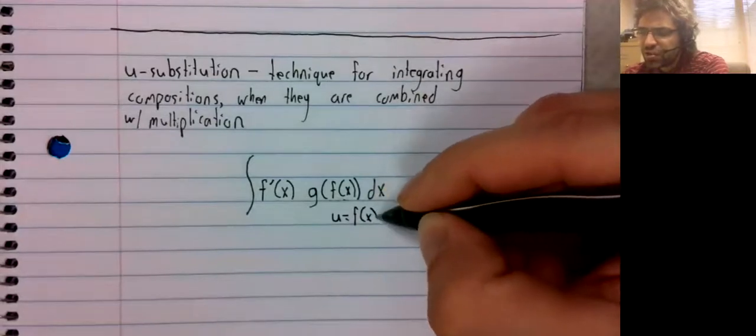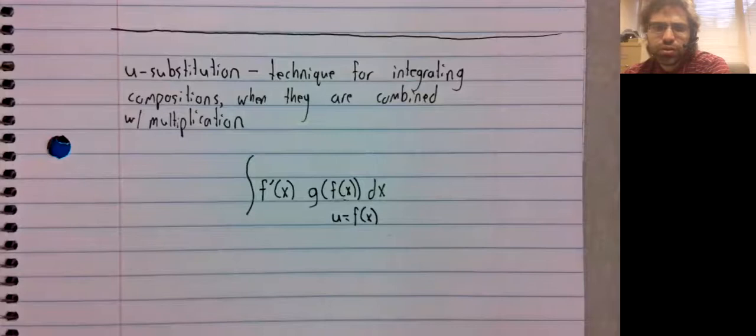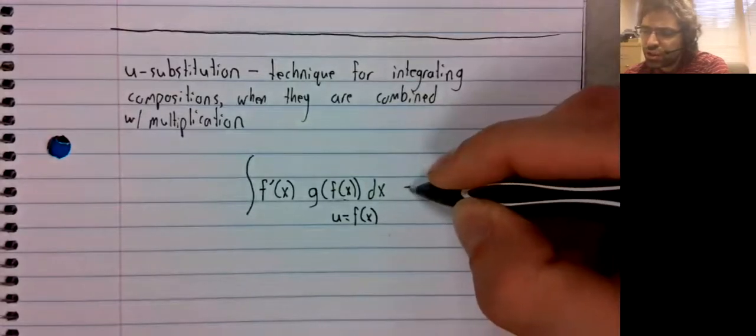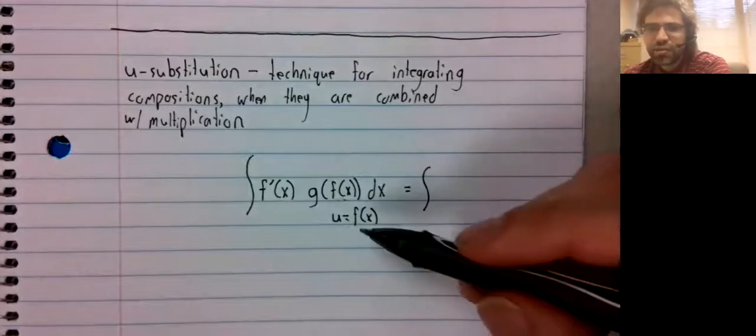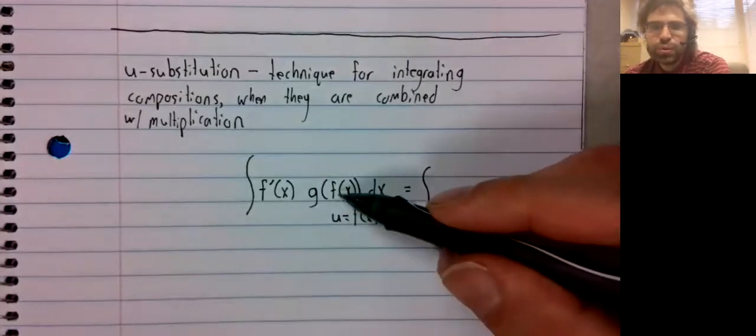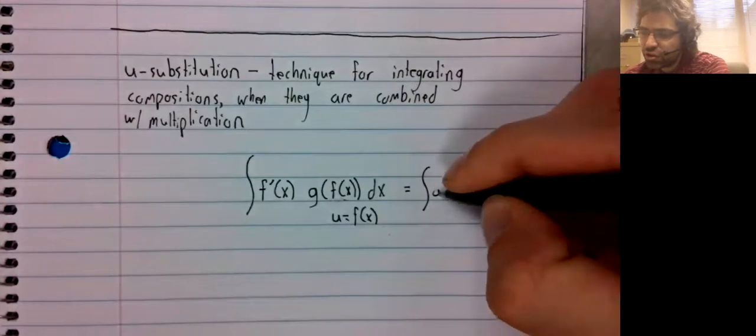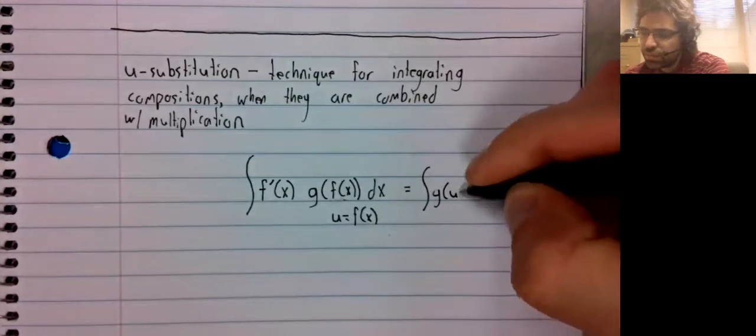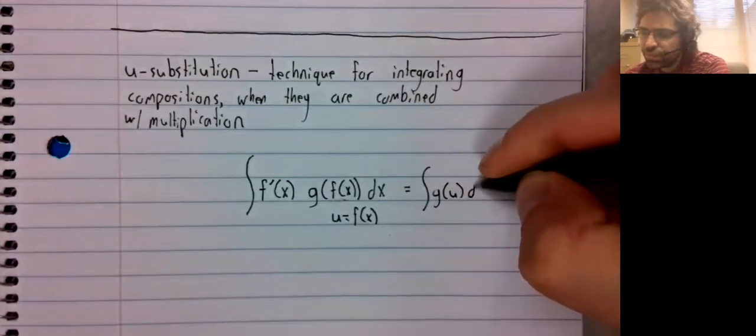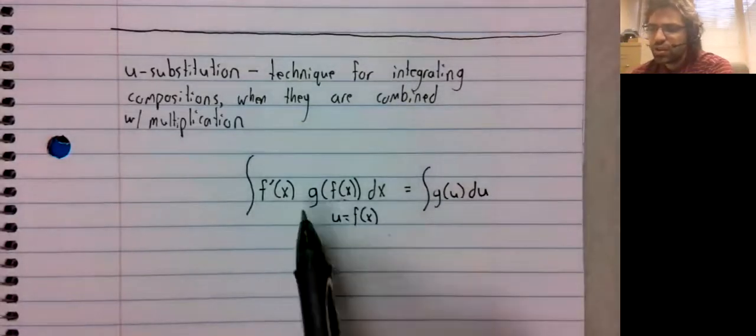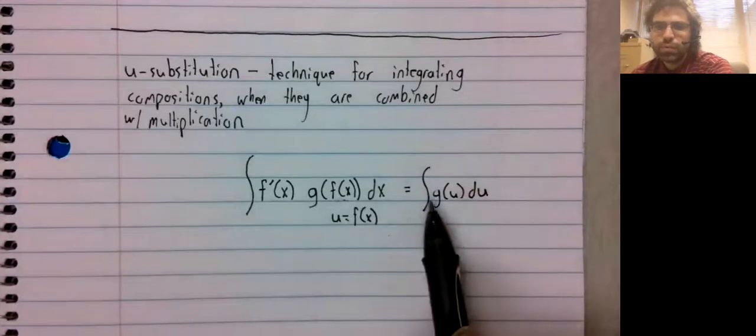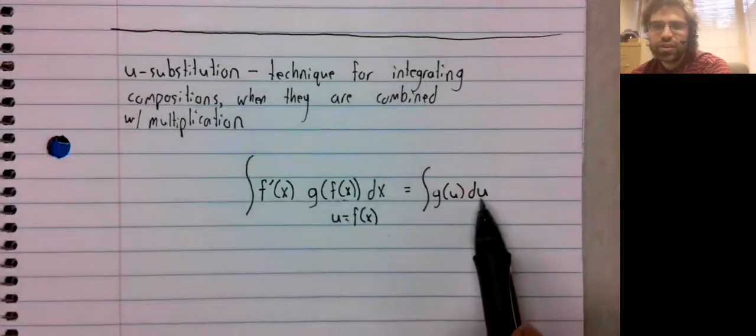And it's called u-substitution because it says that if you let u be this inside function, this integral turns into this integral.